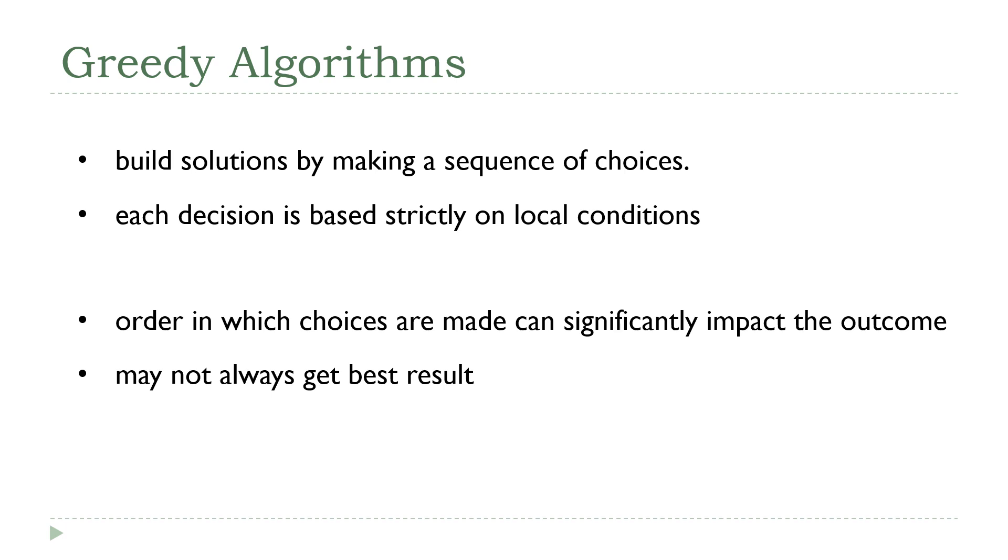So, some of the downfalls of greedy algorithms, and we saw this in our example, the order in which the choices are made can significantly impact the outcome. In this case, my very first choice, what my starting point was, made a pretty decent difference in my final outcomes. Another area where this can come up is, what about if you have a tie? What if you have two vertices, both of which have the lowest cost? Well, with greedy algorithms, what you'll usually do is choose at random.